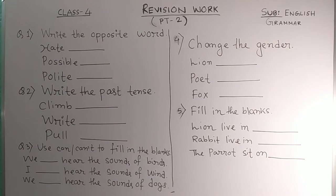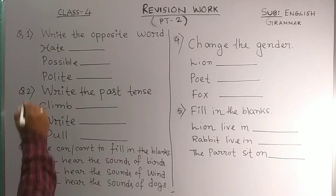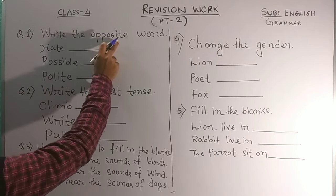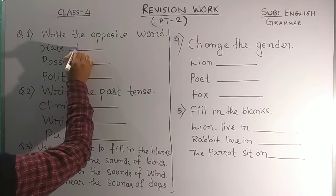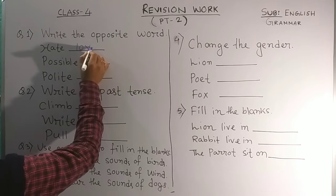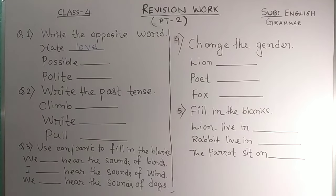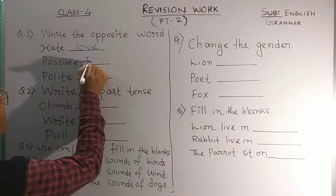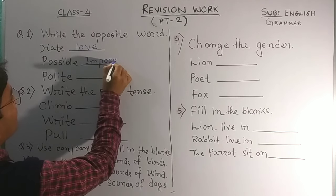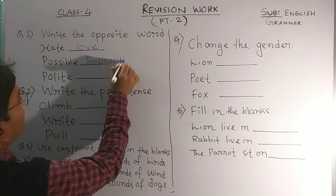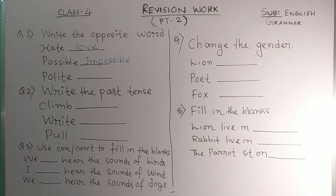First, you can write the exercises, then one by one write the answers. The first exercise is opposite words. So the opposite of 'hate' you can write 'laugh.' Then 'possible' — it is 'impossible.' I wish you also know that answer. If you know another opposite word, please write it in the comment box.